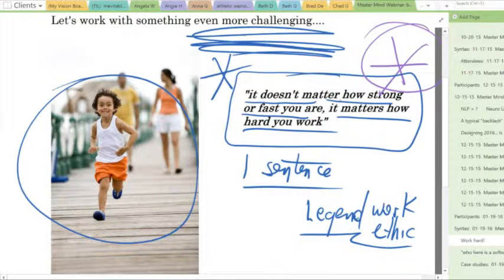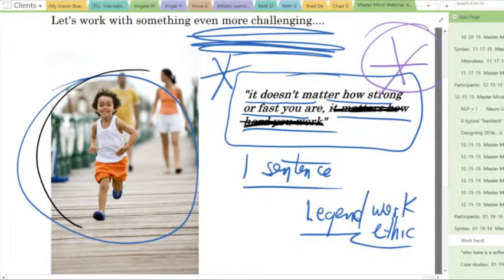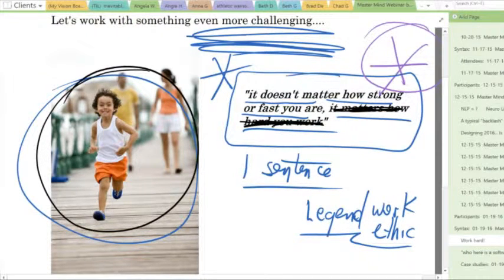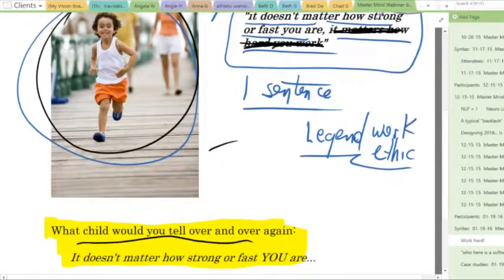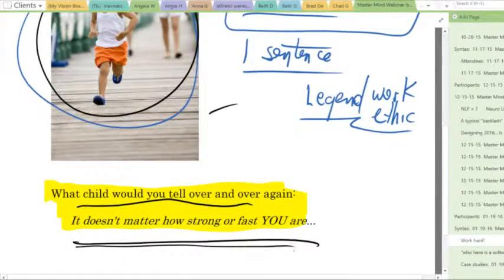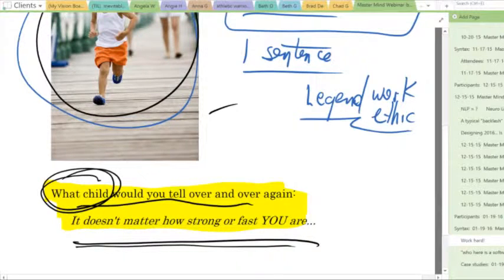Scratch out the back part of the sentence. And think about this little boy running, playing, jumping, having fun. It doesn't matter how strong or fast you are. It doesn't matter how strong or fast you are. It doesn't matter how strong or fast you are. And there's only one child you would tell this to.